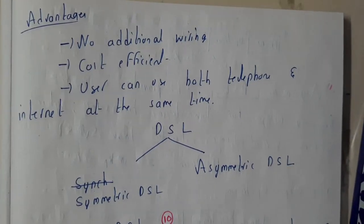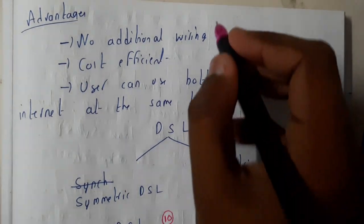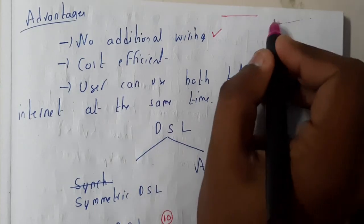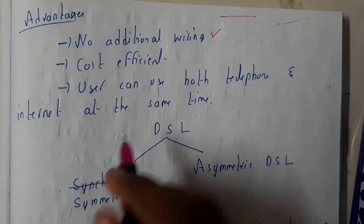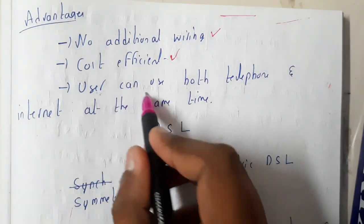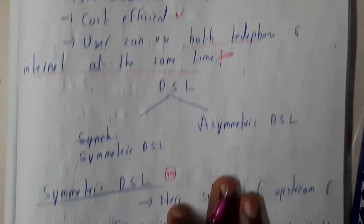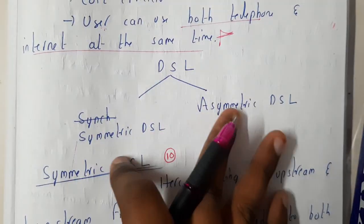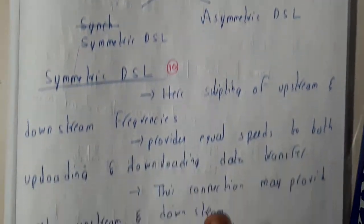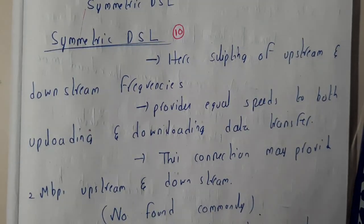The advantages of DSL are: we do not require any additional wiring — there's no separate wire for your landline and another for internet — so it is cost efficient. We can also use both telephone and internet at the same time. DSL is divided into two types: synchronous and asynchronous. In the next tutorial we'll be going through synchronous DSL. Thanks for watching.